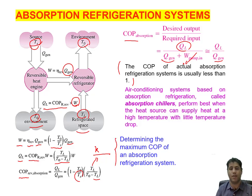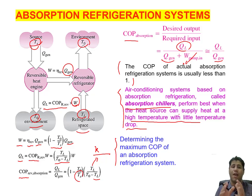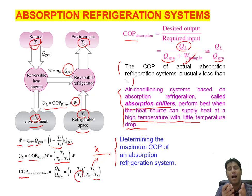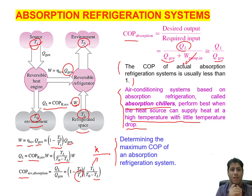Air conditioning systems based on this absorption refrigeration system — also called absorption chillers — perform best when the heat source can supply heat at high temperature with a small temperature drop. The higher the heat source temperature T_S, the higher the COP. With this, we reach the end of the chapter — this is the last type of refrigeration system introduced.